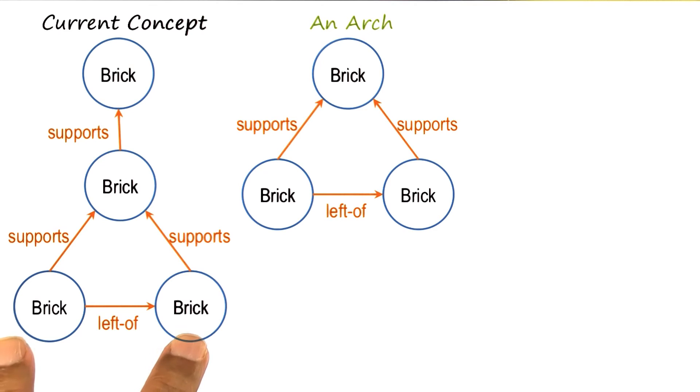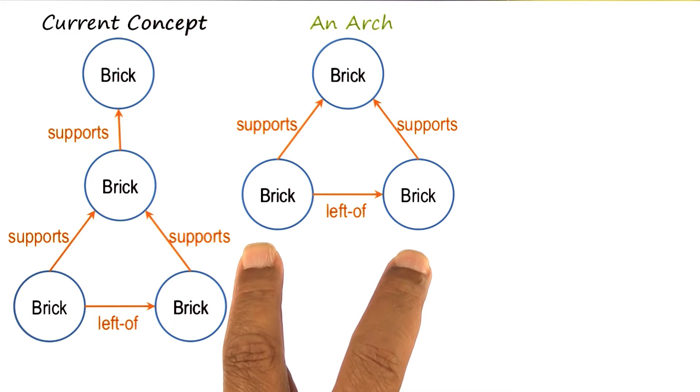This was the current concept definition of the AI program for the concept of arch, and here is a new example. How should the AI program revise its current concept definition of an arch in order to accommodate this positive example?